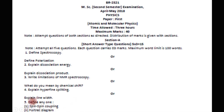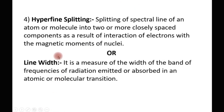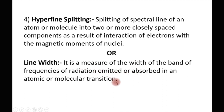The next question is: define line width. Line width is the measure of the width of a band of frequencies of radiation emitted or absorbed in an atomic or molecular transition. For convenience, consider two energy levels — between these two levels there occurs an atomic or molecular transition. As a result of this transition, we obtain a band of frequencies, and the width of that band of frequencies is known as the line width. This band is composed of radiation frequencies obtained by the process of emission or absorption in atomic or molecular transitions.